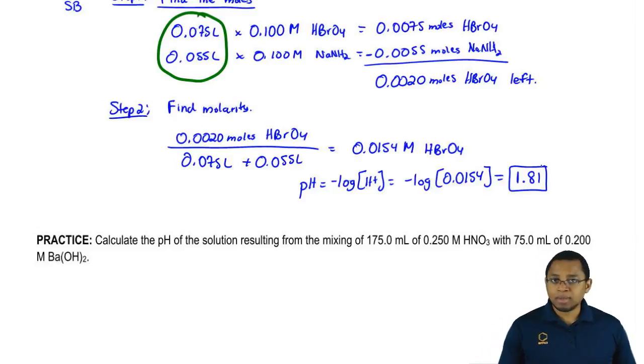So it's as simple as that. Just remember the steps. Step 1, find moles. Step 2, find molarity. Step 3, I guess you just take the negative log of whatever your answer is to find either pH or pOH. And that's all you really have to do. There's no need of any type of chart.